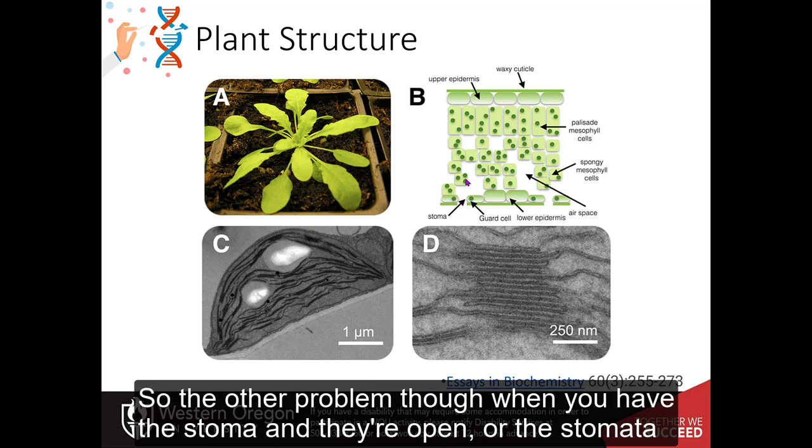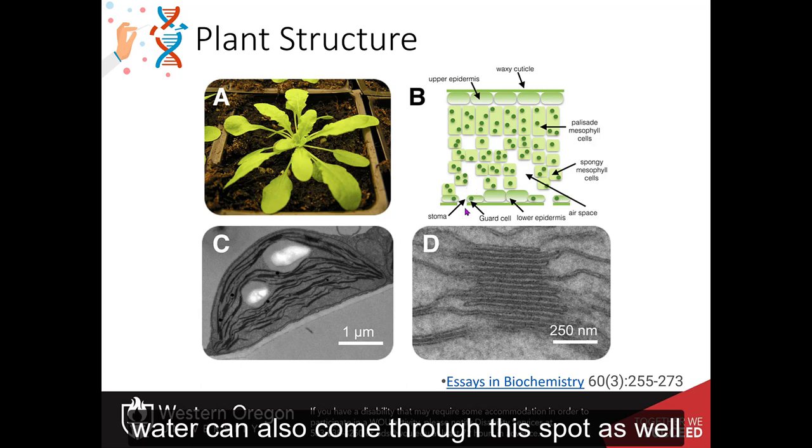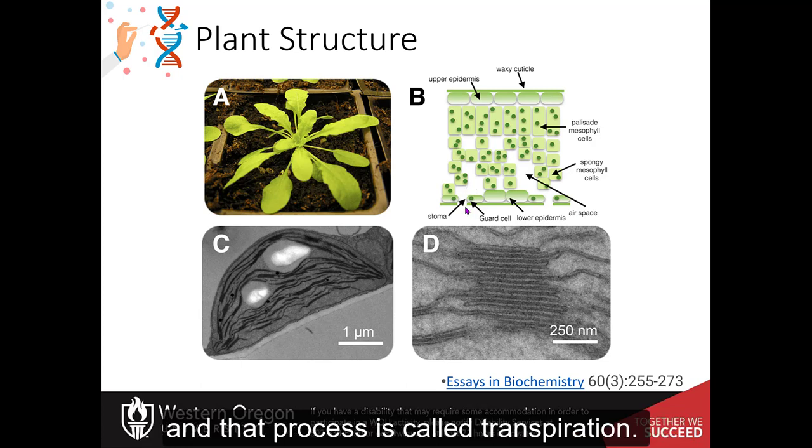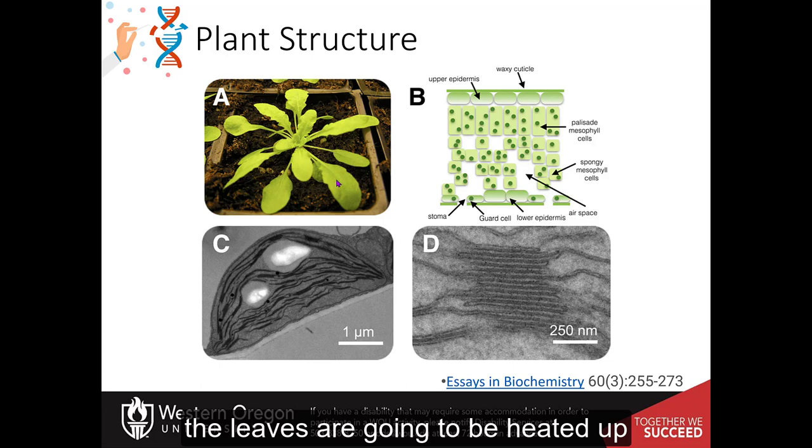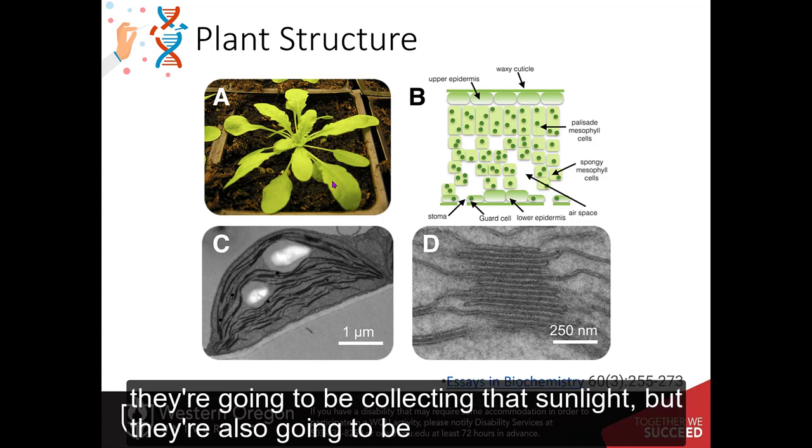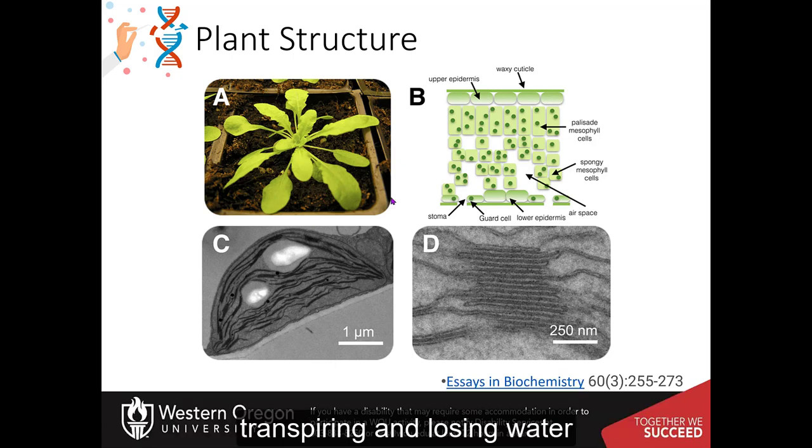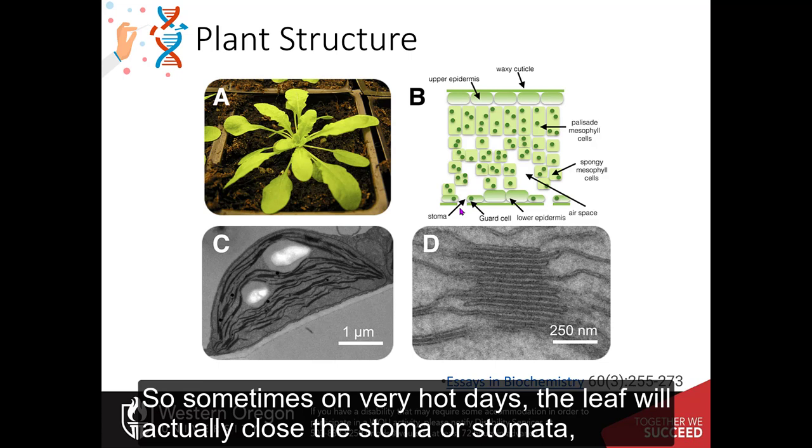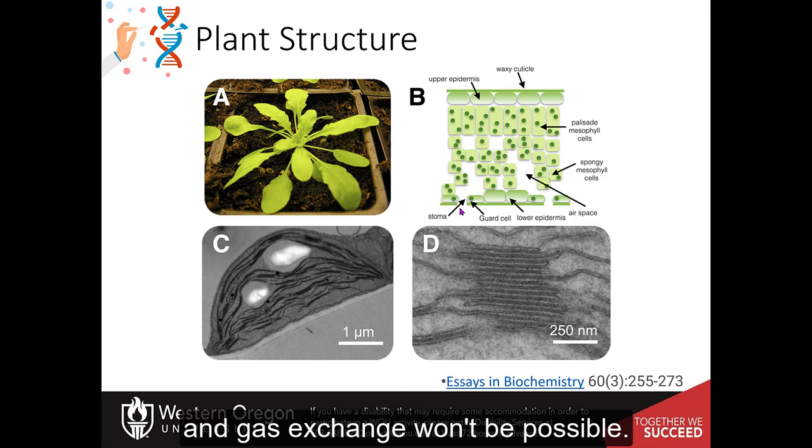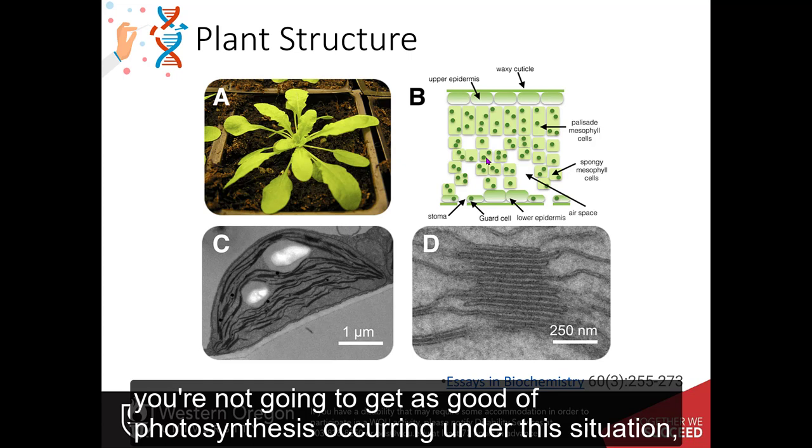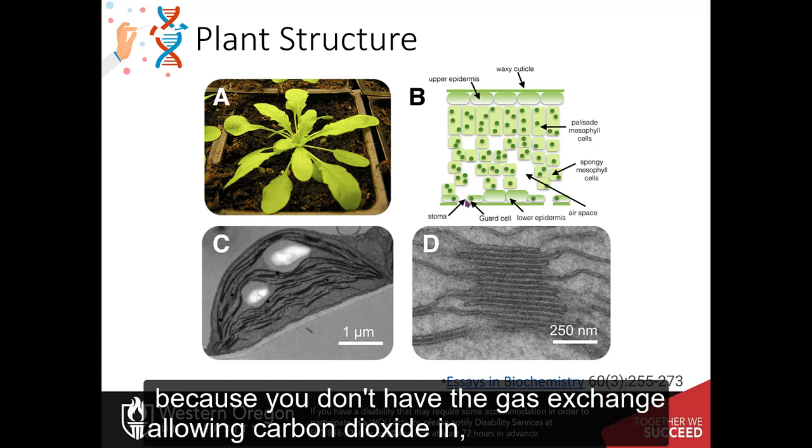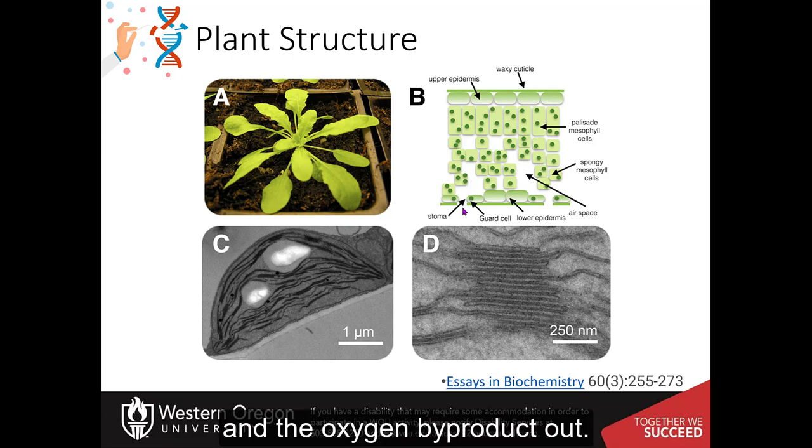So the other problem, though, when you have the stoma and that they're open or stomata, water can also come through this spot as well. And that process is called transpiration. And so if you have a really hot day and it's very sunny outside, the leaves are going to be heated up. They're going to be collecting that sunlight, but they're also going to be transpiring and losing water. So sometimes on very hot days, the leaf will actually close the stoma or stomata, and gas exchange won't be possible. And so in situations like this, where you may have some wilting of the plant, you're not going to get as good photosynthesis occurring under that situation because you don't have the gas exchange allowing carbon dioxide in and the oxygen byproduct out.